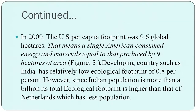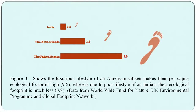Whereas a poor person who uses a cycle to travel, has very few gadgets and a low income, has a low ecological footprint. In 2009, the US per capita footprint was 9.6 global hectares, meaning a single American consumed energy and materials equal to that produced by 9 hectares of area. As seen in figure 3, developing countries such as India have a relatively low ecological footprint of 0.8. However, since the Indian population is more than a billion, its total ecological footprint is higher than that of Netherlands, which has less population. India has 0.8, Netherlands 3.8 and the United States 9.6 per capita ecological footprint.